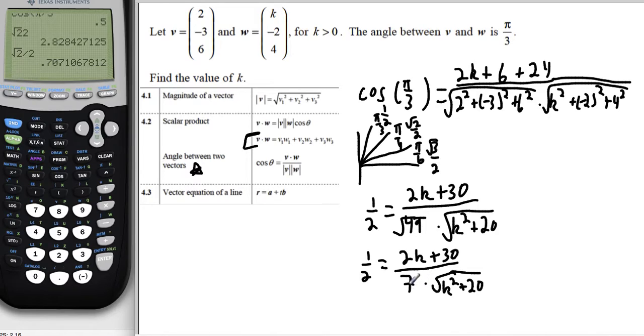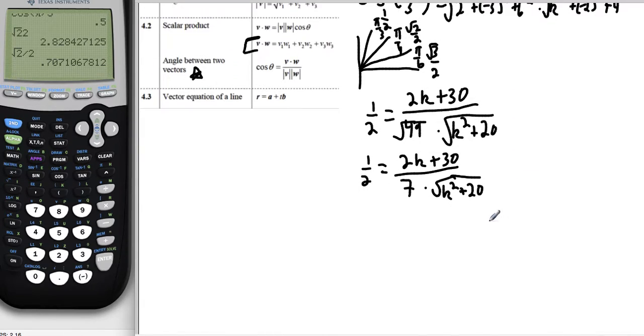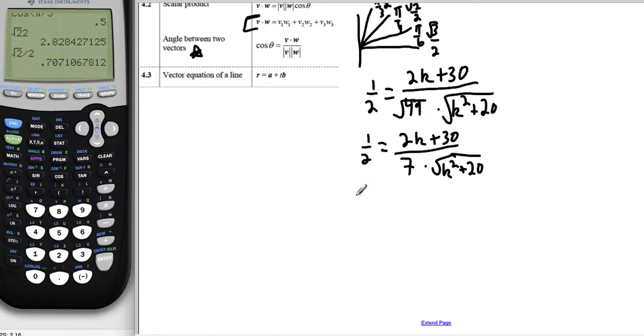So I'm multiplying my denominator by 7. So if I multiply the whole thing by 7, I'll get the 7 out and move it to the other side. So get some more space here. I'm going to multiply both sides by 7. So I have 7 halves, because it's 1 half times 7, equals 2k plus 30 over the root of k squared plus 20. So this isn't a very nice equation, but we do have the calculator for this problem. So we can type this in as nasty as it looks and get an answer.